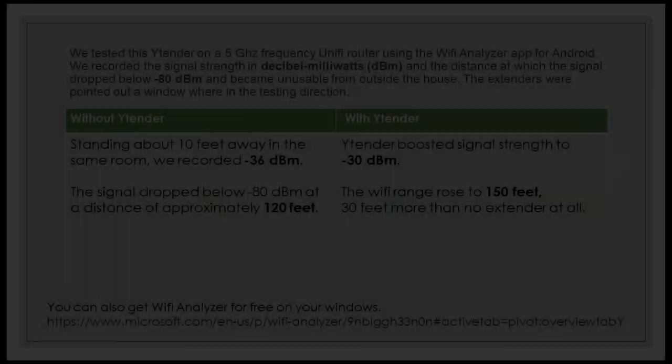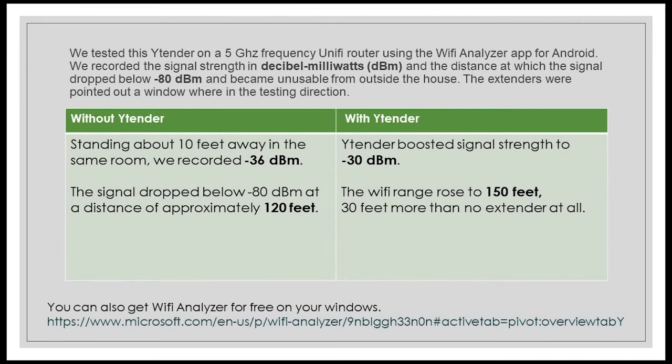In order to give you a better understanding of our project, we have provided data comparing the signal strength with and without the extender. With that being shown, it is proven that the Y-Tender helped a lot in improving the signal strength. However, the Y-Tender does have flaws too. It is created so that it can reflect the radio waves in only one direction, meaning the WiFi strength will only be stronger in one direction but not on the opposite side. We believe that the Y-Tender is suitable for those with a router located at the corner of the house.